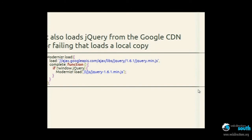It also loads jQuery from Google CDN, and if that fails, it checks the jQuery global object. If that fails, then it will fall back to a local copy. So, it's got that covered.